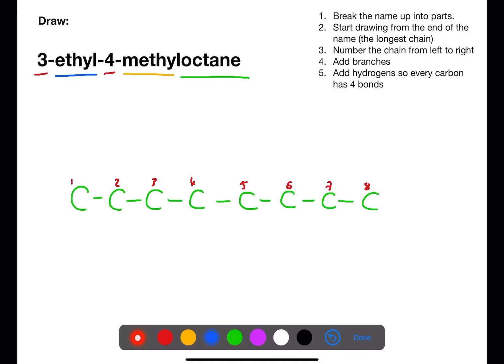On the third carbon we have an ethyl branch. Ethyl contains two carbons. And on the fourth carbon we have a methyl branch. This has one carbon. We're then going to move around the structure and fill in the bonds for all of the hydrogens.